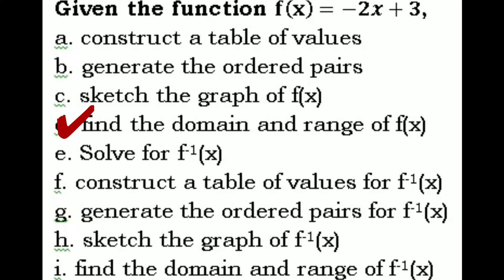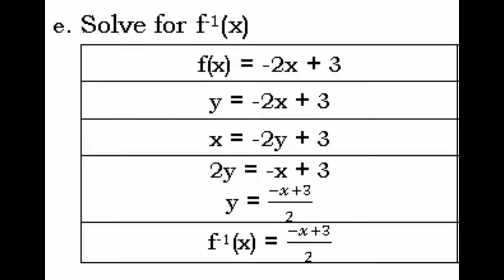Letter E: find f inverse of x. Given f(x) = -2x + 3, first change f(x) to y: y = -2x + 3. Then interchange x and y: x = -2y + 3. Solve for y: transpose -2y to the left and x to the right, giving 2y = -x + 3. Divide both sides by 2: y = (-x + 3) / 2. Change y to f inverse of x, so f⁻¹(x) = (-x + 3) / 2.